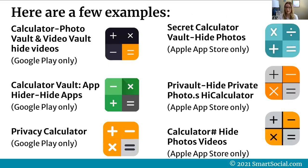Here are a few examples of apps currently available. Some titles from Google Play include: Calculator Photo Vault and Video Vault Hide Videos, Calculator Vault App Hider Hide Apps, and the more obvious Privacy Calculator. From the Apple App Store, examples include: Secret Calculator Vault Hide Photos, Privault Hide Private Photos, Hide Calculator, and Calculator Hide Photos Videos. Those names are long and complicated, but developers create them that way to continue adding these apps under different names in the app stores.